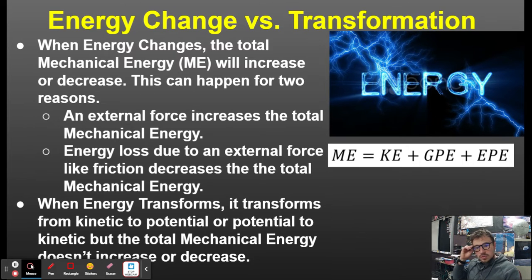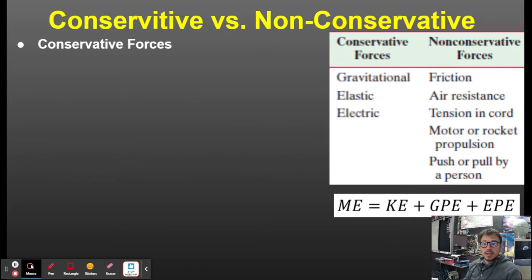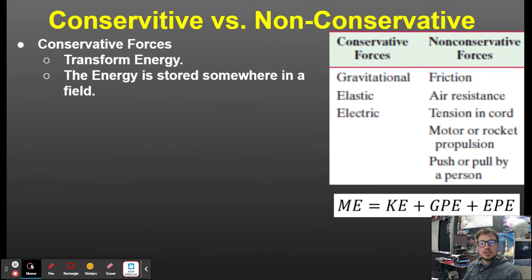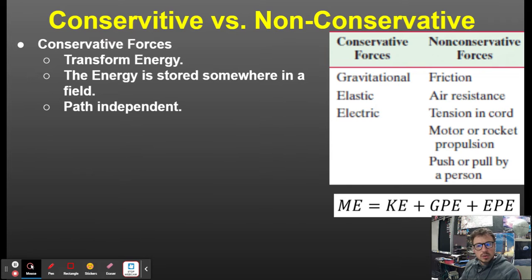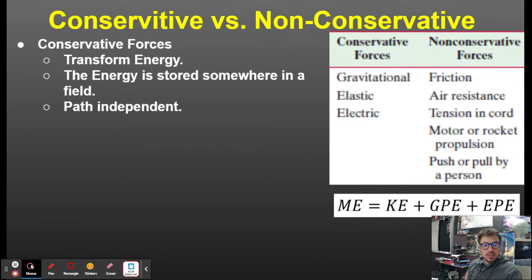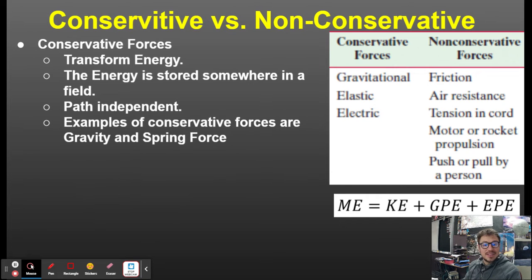When energy transforms, it transforms from kinetic to potential or potential to kinetic, but the total mechanical energy does not increase or decrease. This is caused by conservative forces — and the big one is gravity. Conservative forces transform energy; the energy is stored somewhere in a field. Conservative forces are path independent. That comes into play when we're talking about ramps, because gravity is what's giving that object its energy, and gravity is a path-independent force — it is a conservative force.